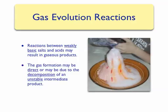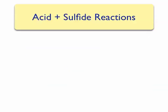The gas that forms may be due to the direct combination of two ions, or it can be due to the decomposition of an unstable intermediate. We will discuss three classes of gas evolution reactions.